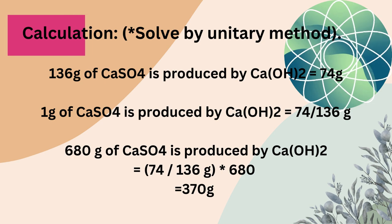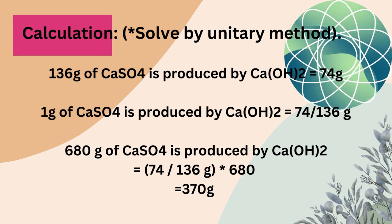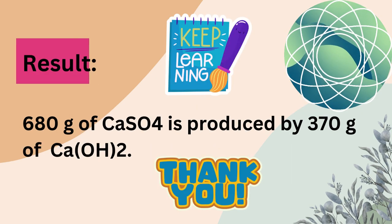680 grams of calcium sulfate is produced by calcium hydroxide equals 74 divided by 136 grams multiplied by 680 equals 370 grams.